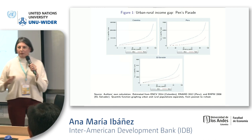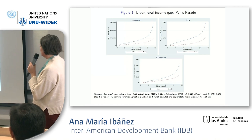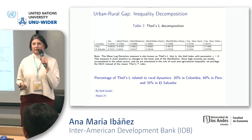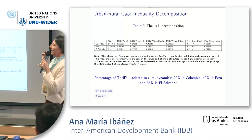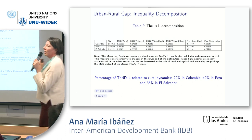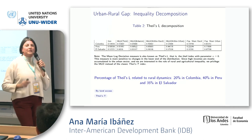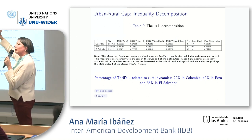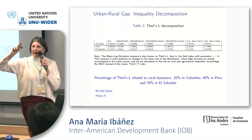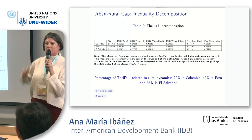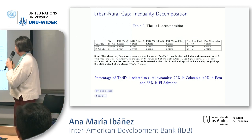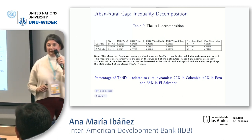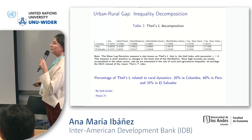What we want to understand is how this contributes to income distribution in Latin America. So the first thing we do is an inequality decomposition, a detailed decomposition index with three of the five countries. What we find quite surprisingly is that rural dynamics do play a large role on income inequality in Latin America. It's not only the rural-urban income gap, but also a very important difference between incomes within rural areas. These two things together explain about 20% of income inequality in Colombia, about 40% in Peru, and about 35% in El Salvador.